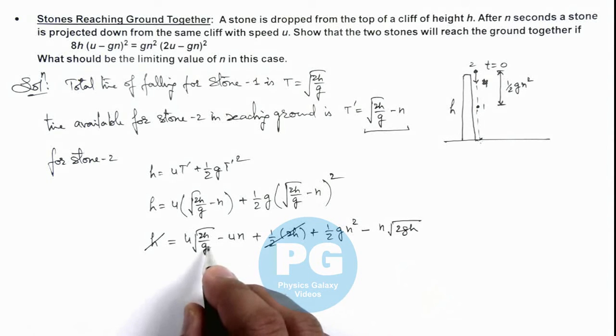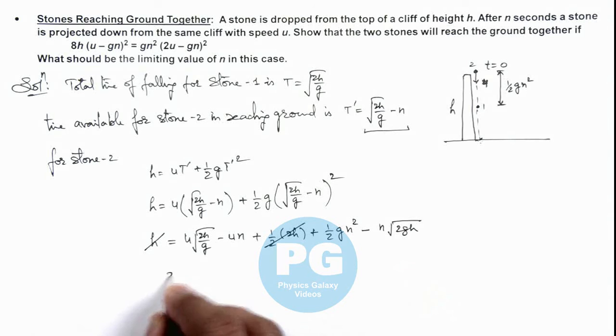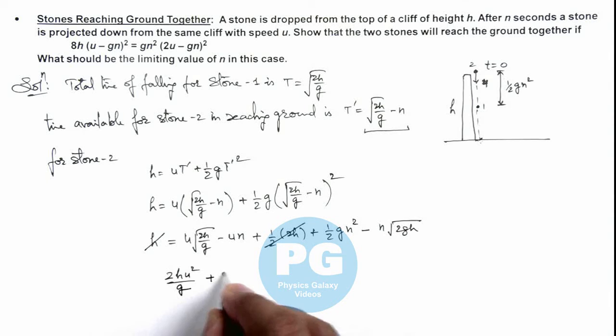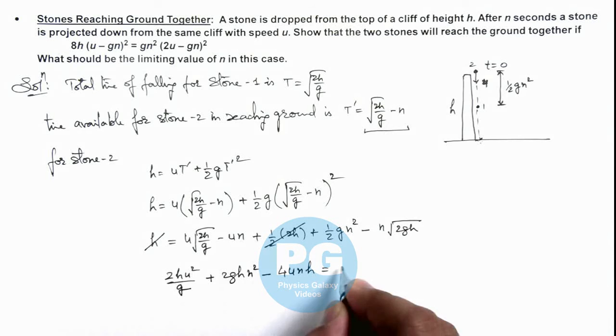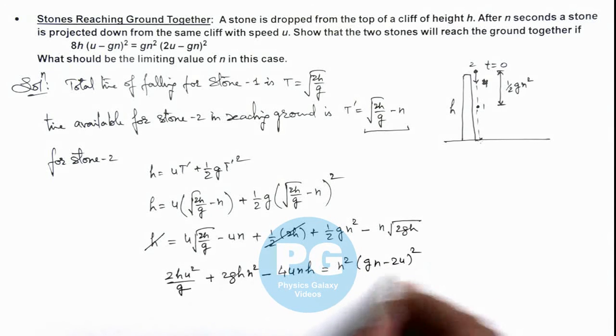Here we can see this will give us 2hu square by g, plus 2gh n square minus 4 times u n h is equal to n square multiplied by g n minus 2u whole square divided by 4.